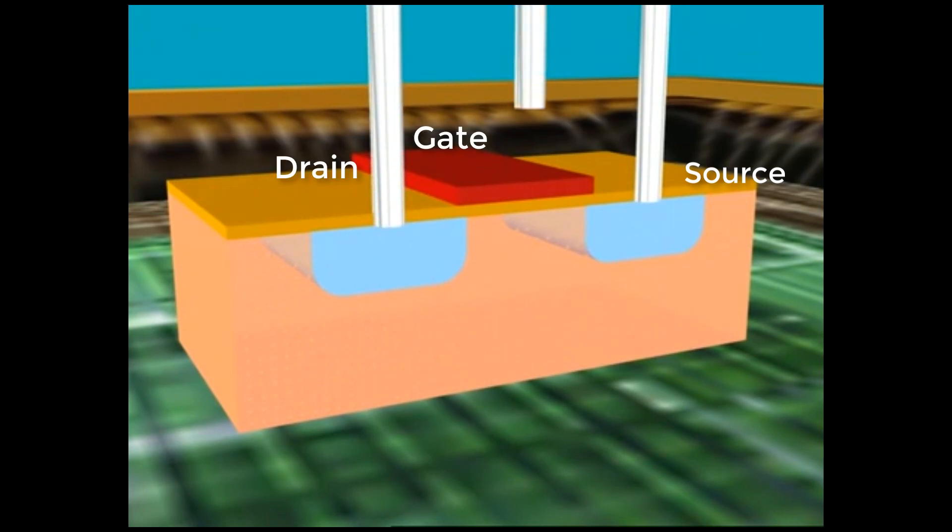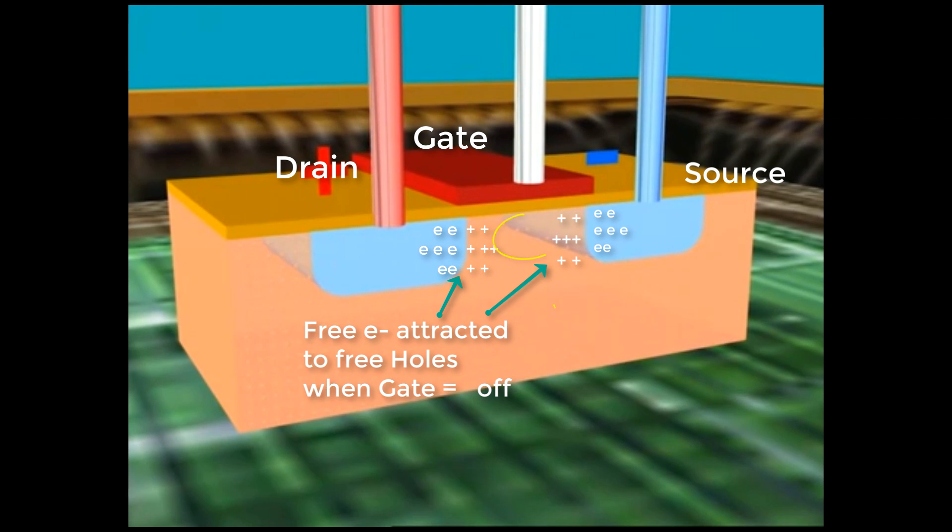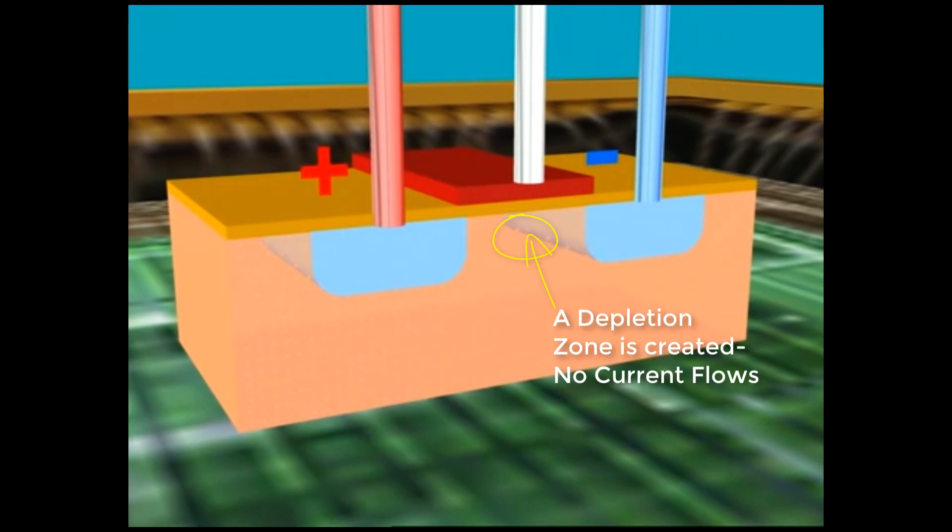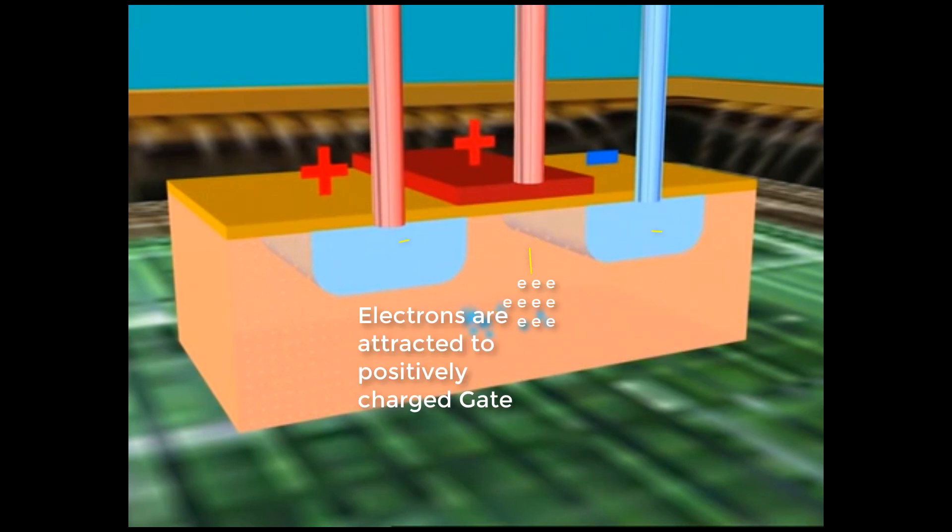If we apply an electrical charge only to the two outer connections, electricity is unable to flow. The transistor is blocked. Things are different when an additional charge is attached to the middle connection.